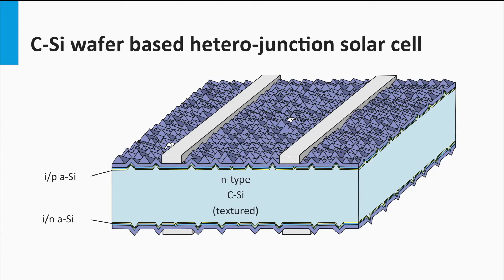This means that making the front surface and the back surface field in this type of solar cells is very cheap. Furthermore, this technology allows to use the N-type wafers.